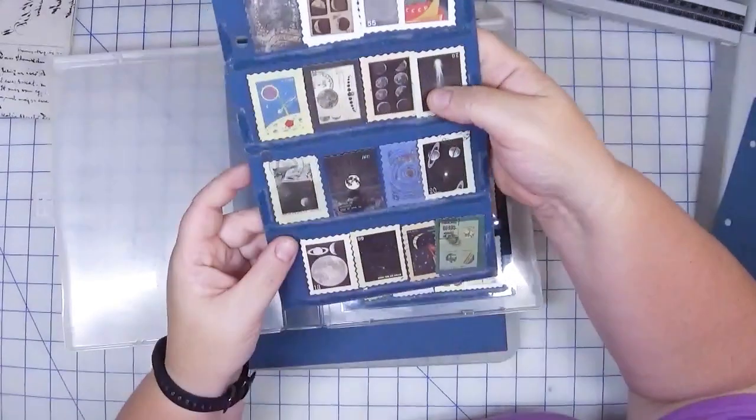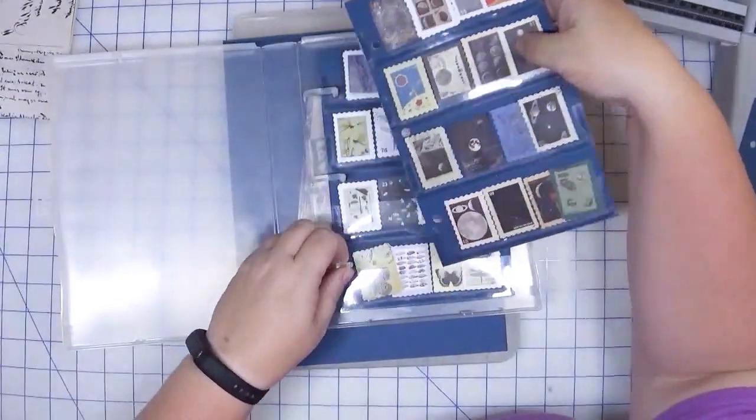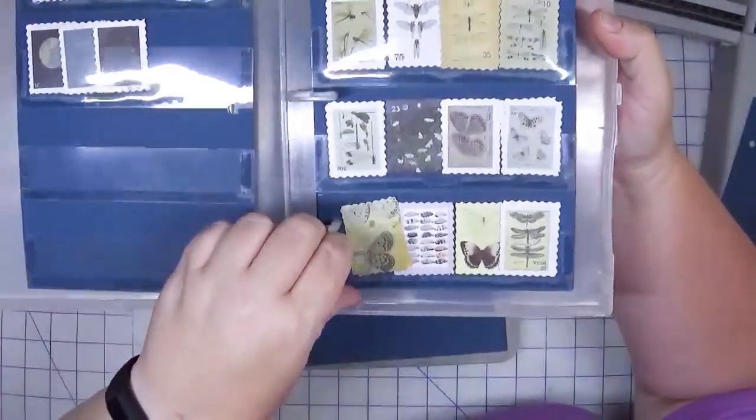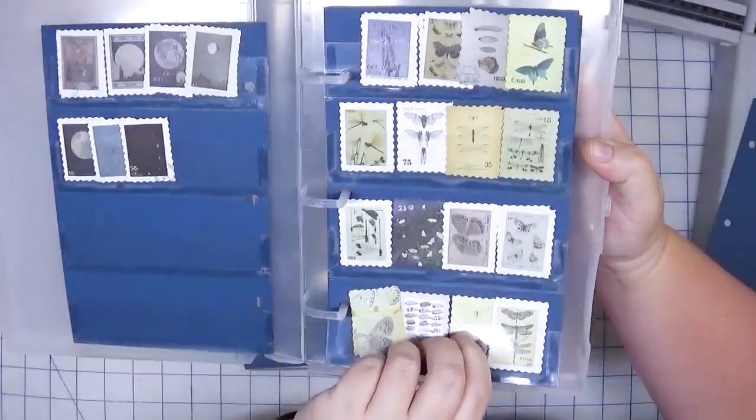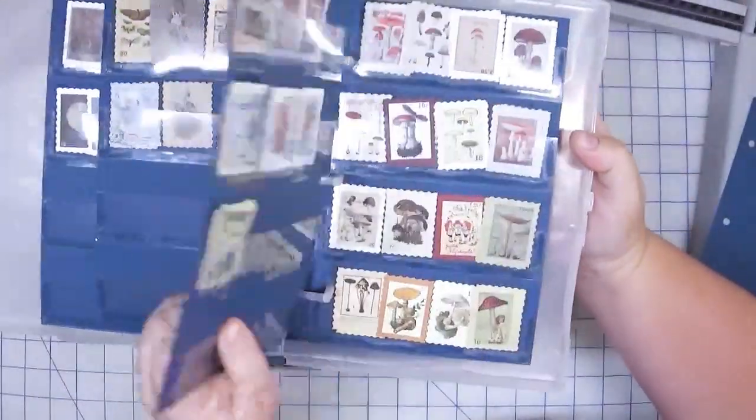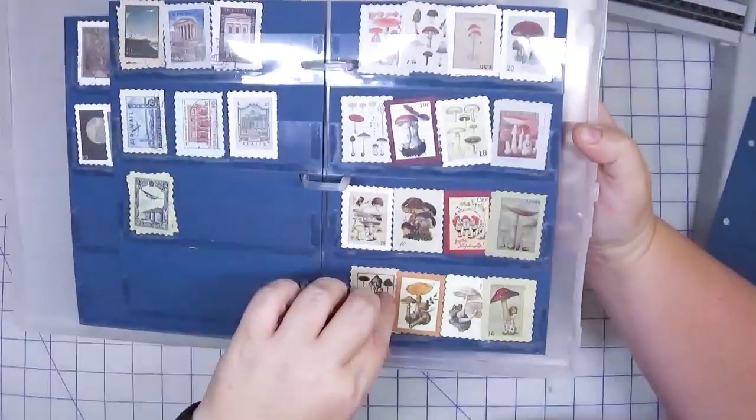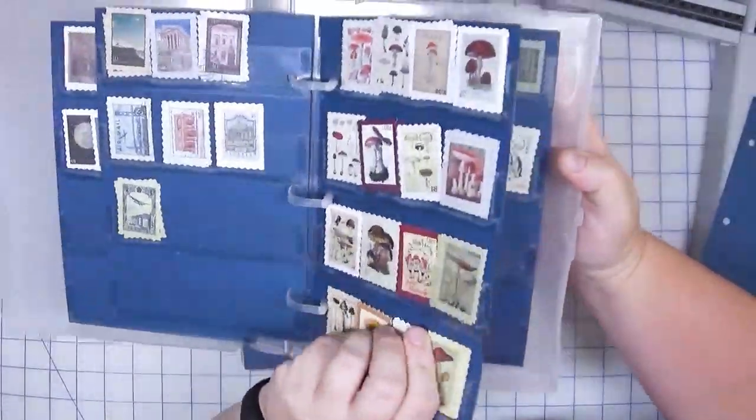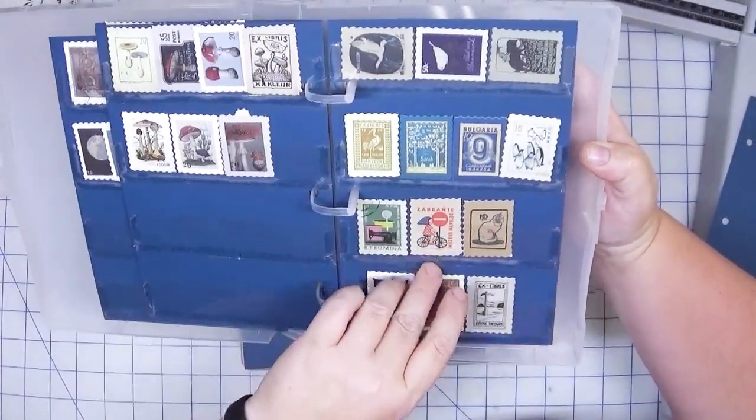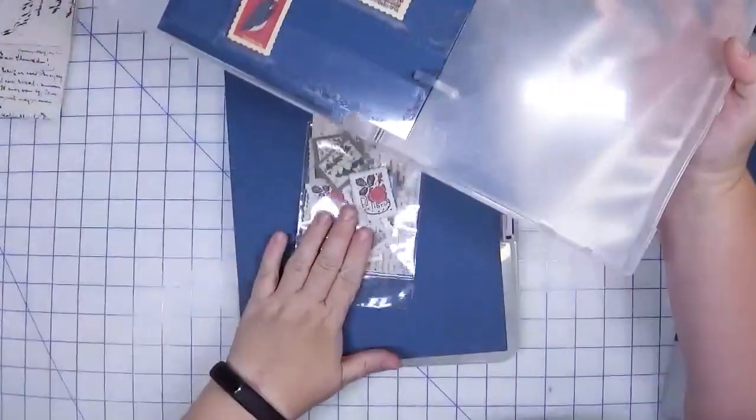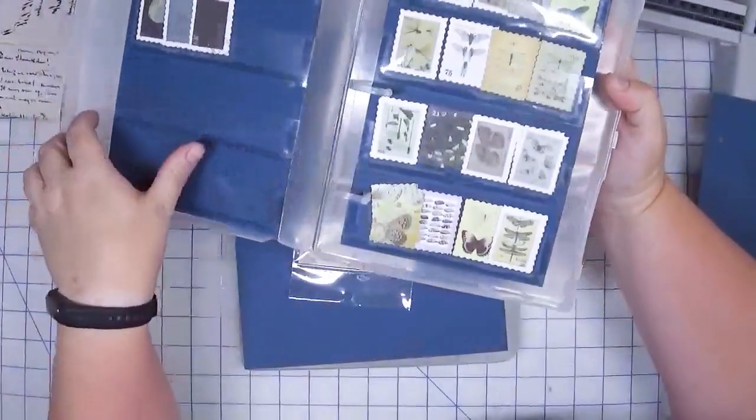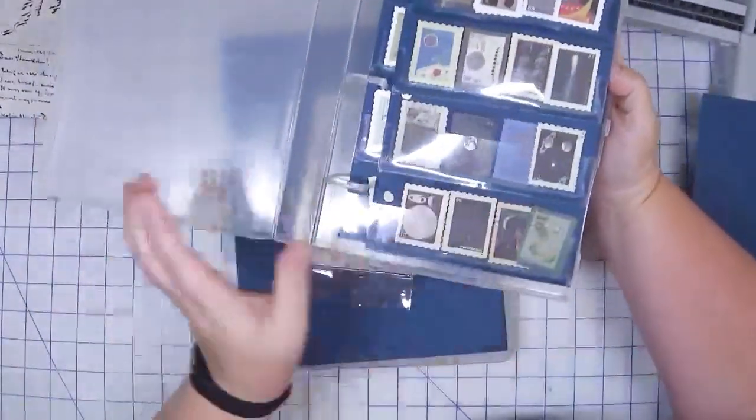These are thematic. They've got a space theme to them, so this will just go in here. I've got these ones that are like bugs and butterflies, and then I've got buildings and the mushrooms. Again, these are just stickers but they look like stamps. Then I have the animals and then the package that I'm working on here which I think are flowers.